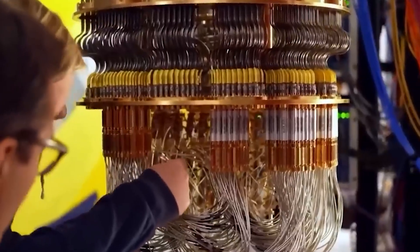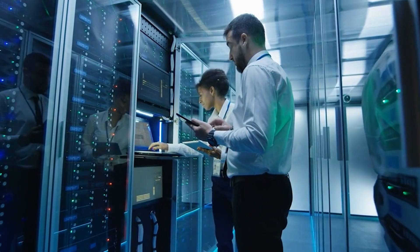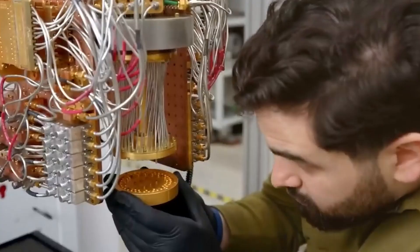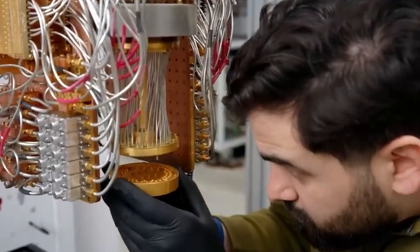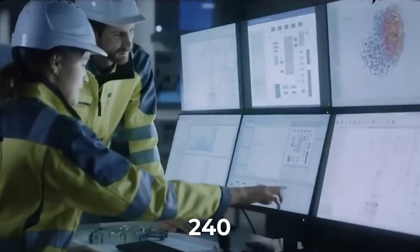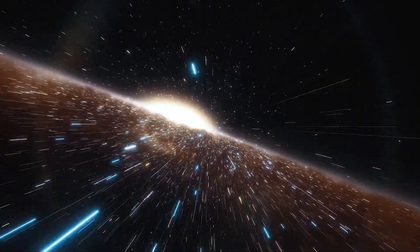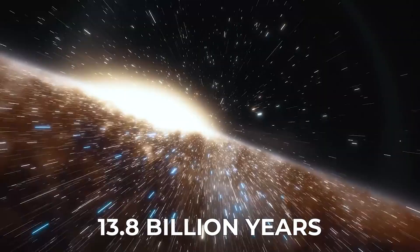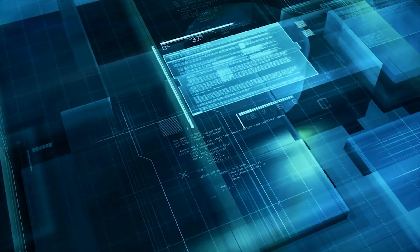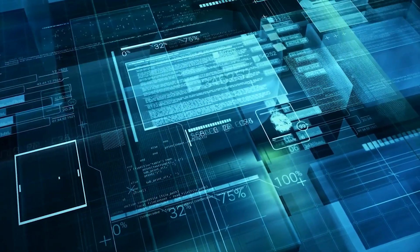It began with an announcement that seemed almost beyond belief. Google unveiled a computer that solved a specific problem in just five minutes, a problem that, if handed to the world's best supercomputers, would have taken them 10 septillion years to complete. That's a one followed by 24 zeros. To put that into perspective, the entire age of the universe is estimated at just 13.8 billion years. In other words, this new computer accomplished something so extreme that it seems cosmically impossible.